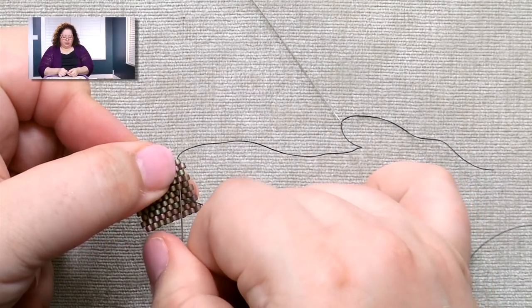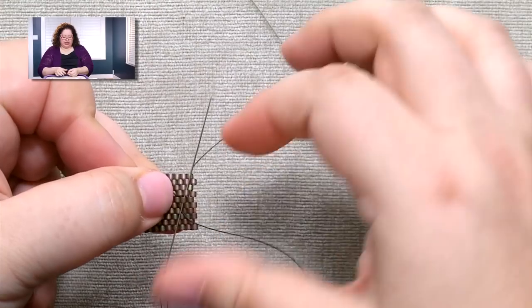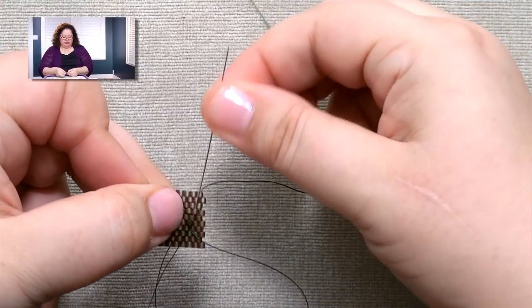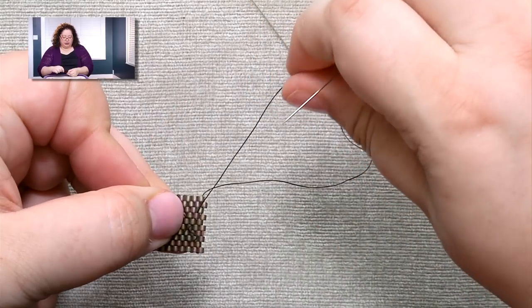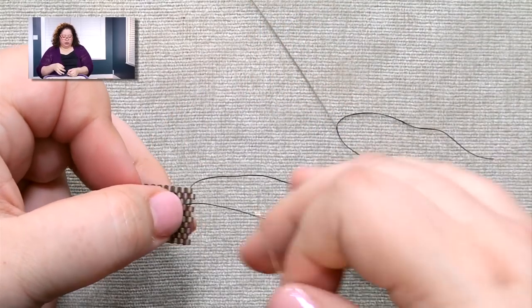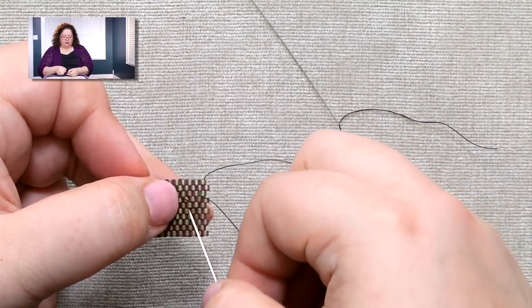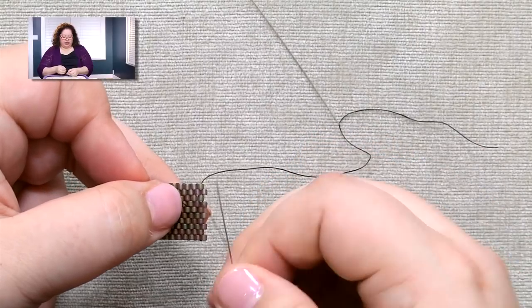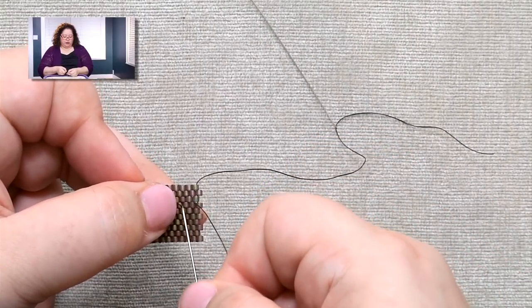My rule of thumb is that I want to change directions at least three times, so this will be my third time changing directions. If possible, I want to also weave back through the same bead in two different directions, which I already did when I was over here in this area.